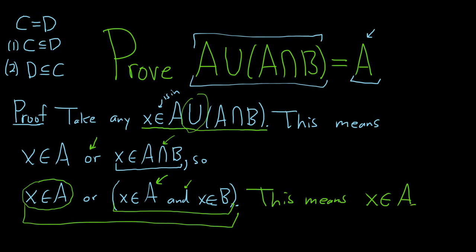This statement will be true if the first condition is true, the second condition is true, or both are true. If the first one is true, X is in A — done. If the second one is true, X is in A — done. If they're both true, X is in A — done. No matter what, we are super done.